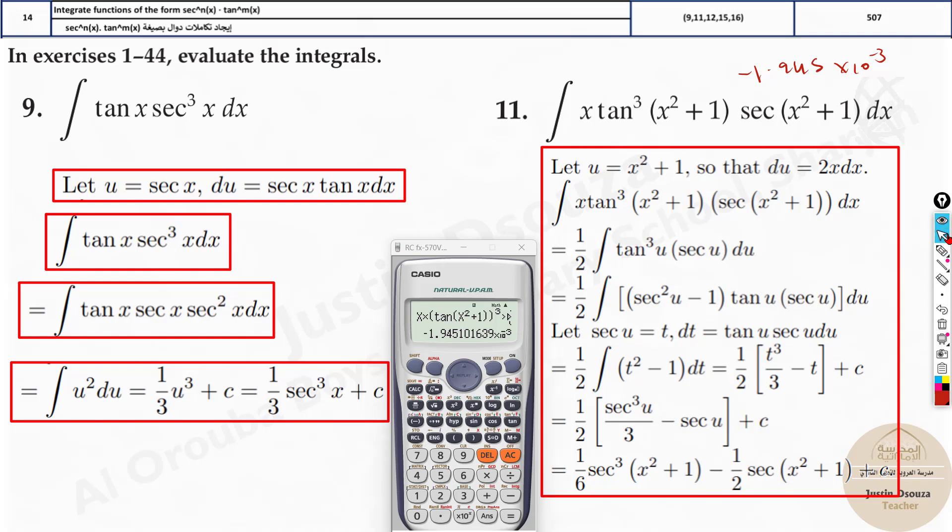Now all you need to do is derive this particular equation at x is equal to 1.5 and it should match this. Now if it doesn't match, that's not the answer. Only one correct answer will match. Now let's press shift and dy by dx. We have assumed x has 1.5. Now integral of this is the answers, right? Now when you derive this, you must get back the question basically.